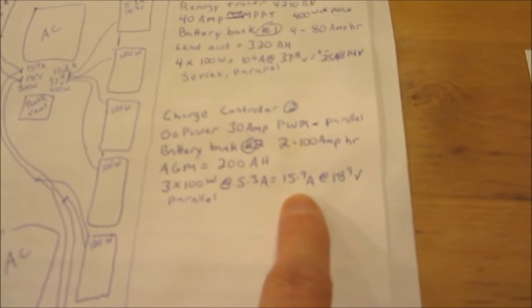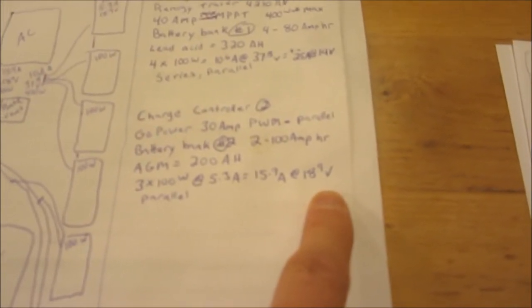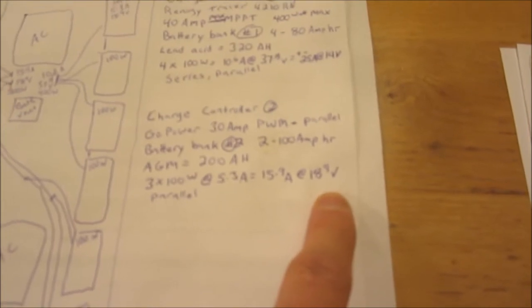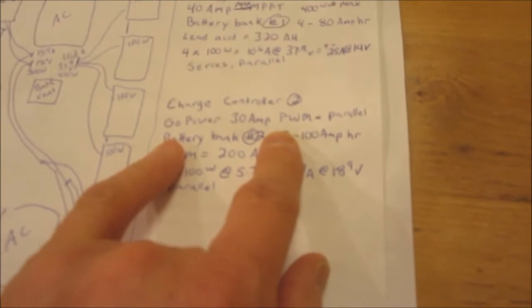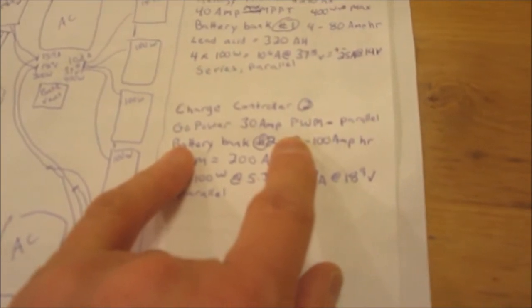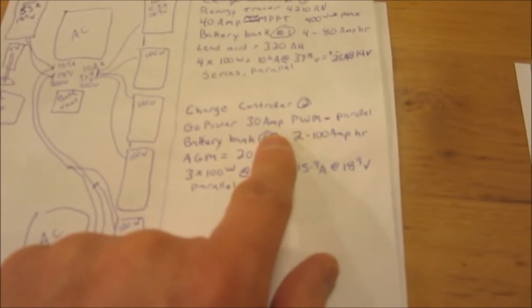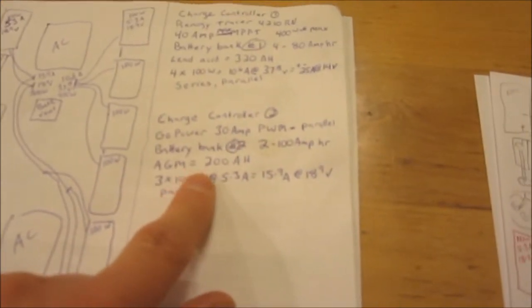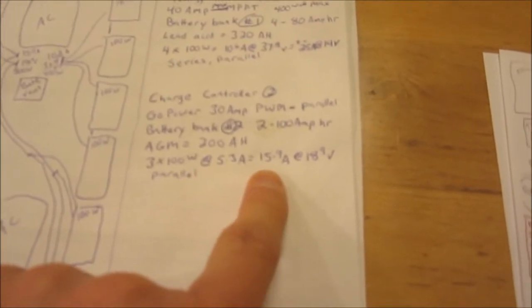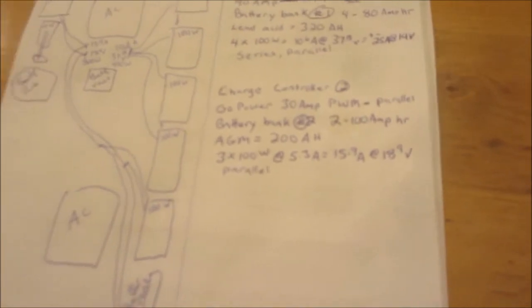That's going to go down to a PWM Go Power. Its max maximum is 30 amp, so we're only about half of its capacity.